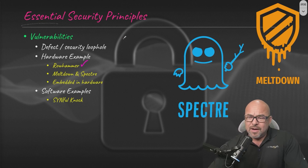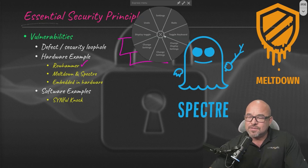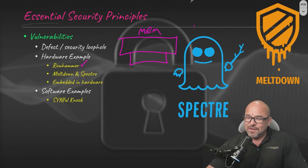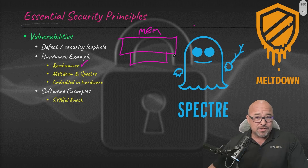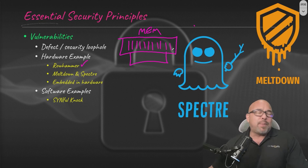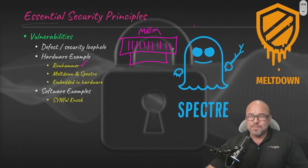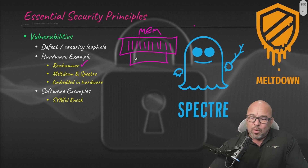Rowhammer is a well-known hardware exploit. If you take a look at a memory module — the kind you've seen in personal computers that get inserted into the motherboard — on these memory modules are various cells that appear on the little black chips. In those chips are cells, and the way memory works is there's an electrical charge that gets written to them.